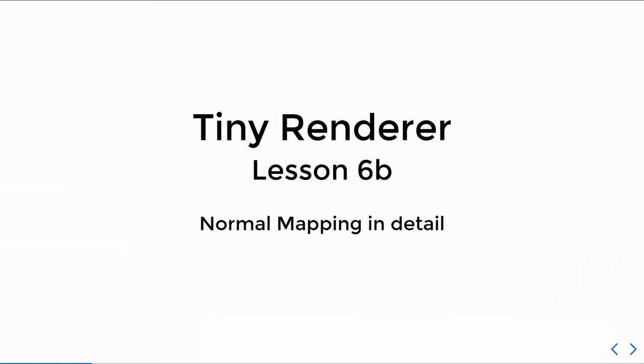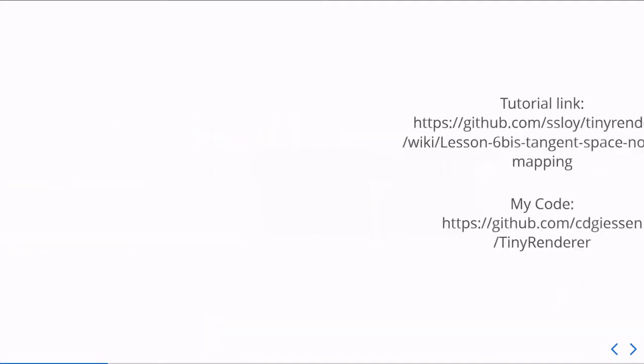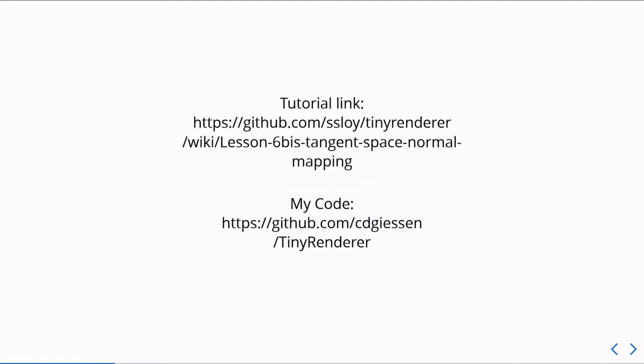The original name is 6BIS and I don't understand why it's called that, but because B is a better name we're calling it 6B and it's about normal mapping in detail rather than in short. As always, there's a link to the tutorial and my code for it.